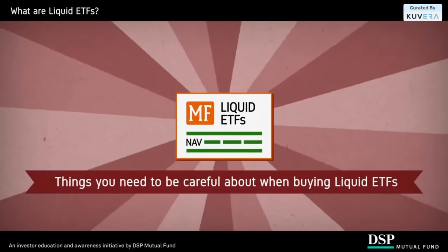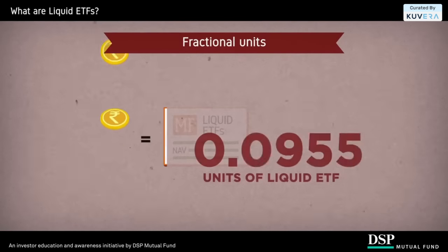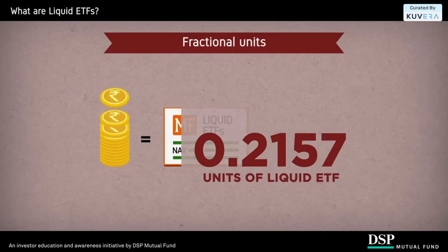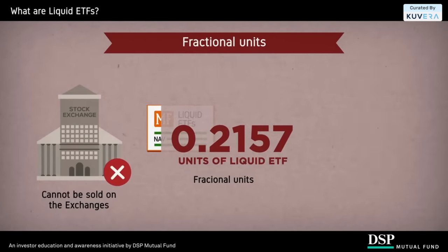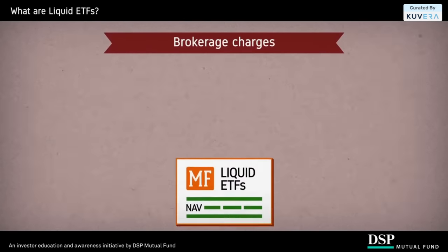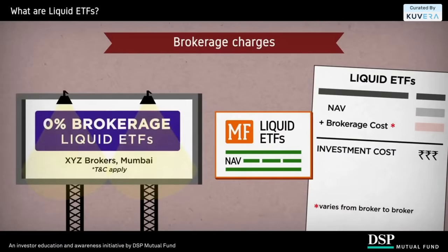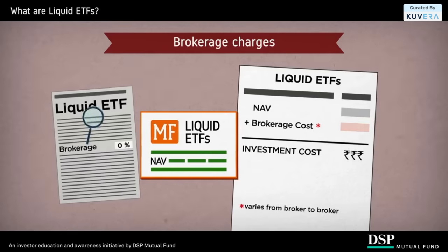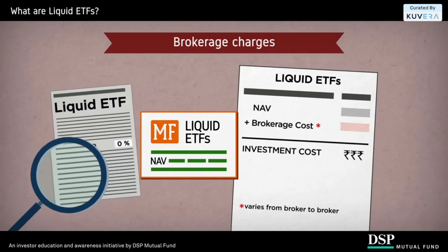The things you need to be careful about when buying liquid ETFs are as follows. Fractional units: liquid ETFs give returns in terms of increase in units, which can add small fractions to existing holdings. Fractional units cannot be sold on the exchanges; however, they can be purchased by the issuing mutual fund house either directly or through stock exchange mutual fund platforms. Brokerage charges: investing in liquid ETFs may incur brokerage charges which vary from broker to broker. Most brokers may not charge any brokerage on the purchase of these products. It is still advisable to confirm the brokerage amounts before making a purchase.